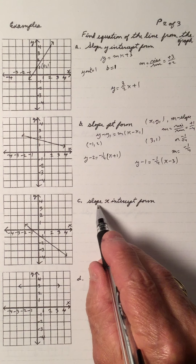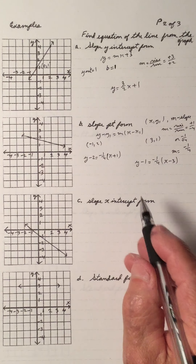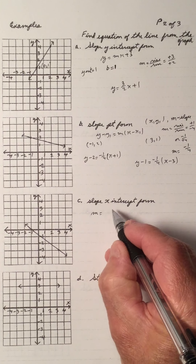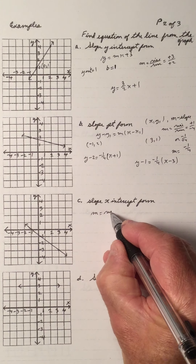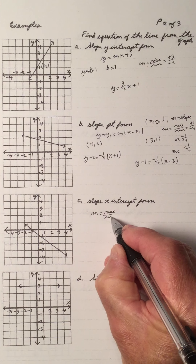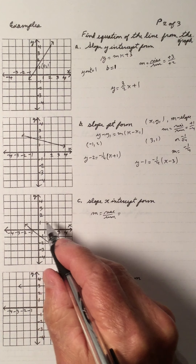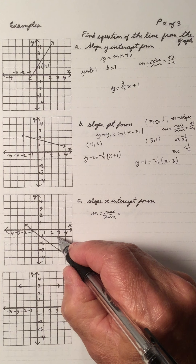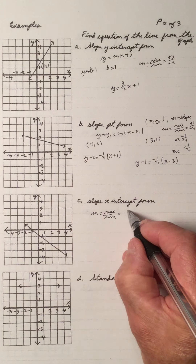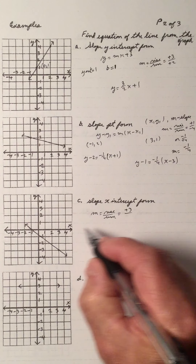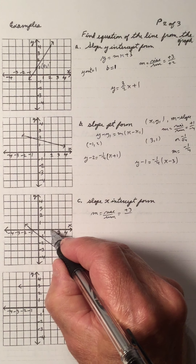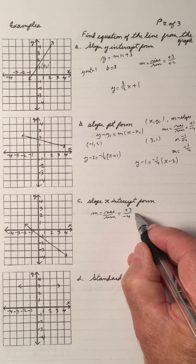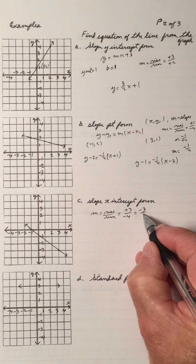Third one: slope x-intercept form. The slope, again, is rise over run. Going from this point to this one, the rise is plus 3 and the run is 1, 2, 3, 4 — but it's a minus 4 to the left, so the slope is negative 3 over 4.